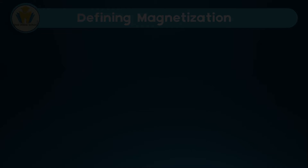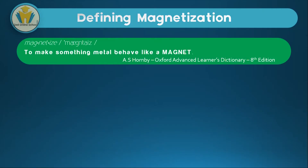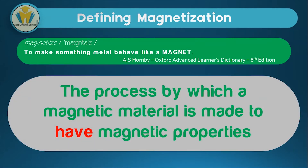How do we define magnetization? We need to understand the word from which magnetization comes, which is magnetize. Magnetize simply means to make something metal behave like a magnet. Therefore, magnetization is the process by which a magnetic material is made to have magnetic properties.